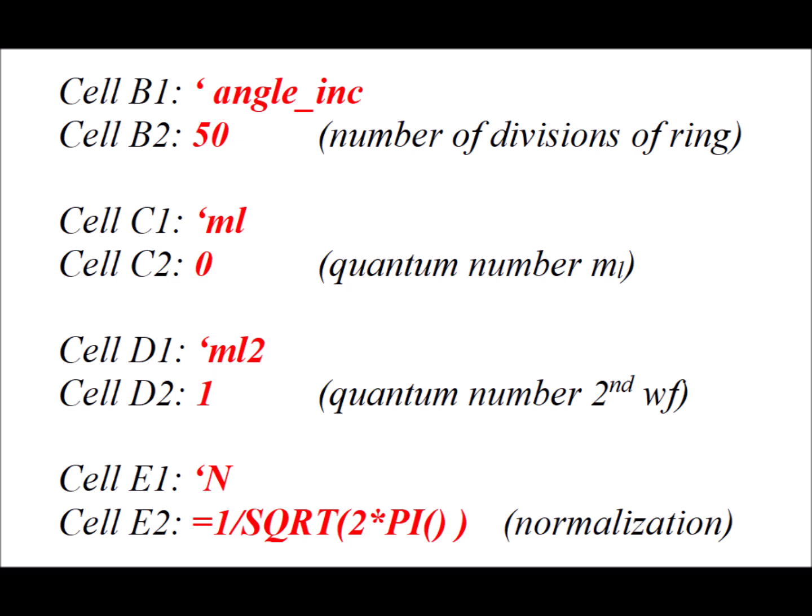Then in cell E1, we have apostrophe capital N, so that's a normalization constant, and in cell E2, we have the formula for that, so that's 1 over the square root of 2π.